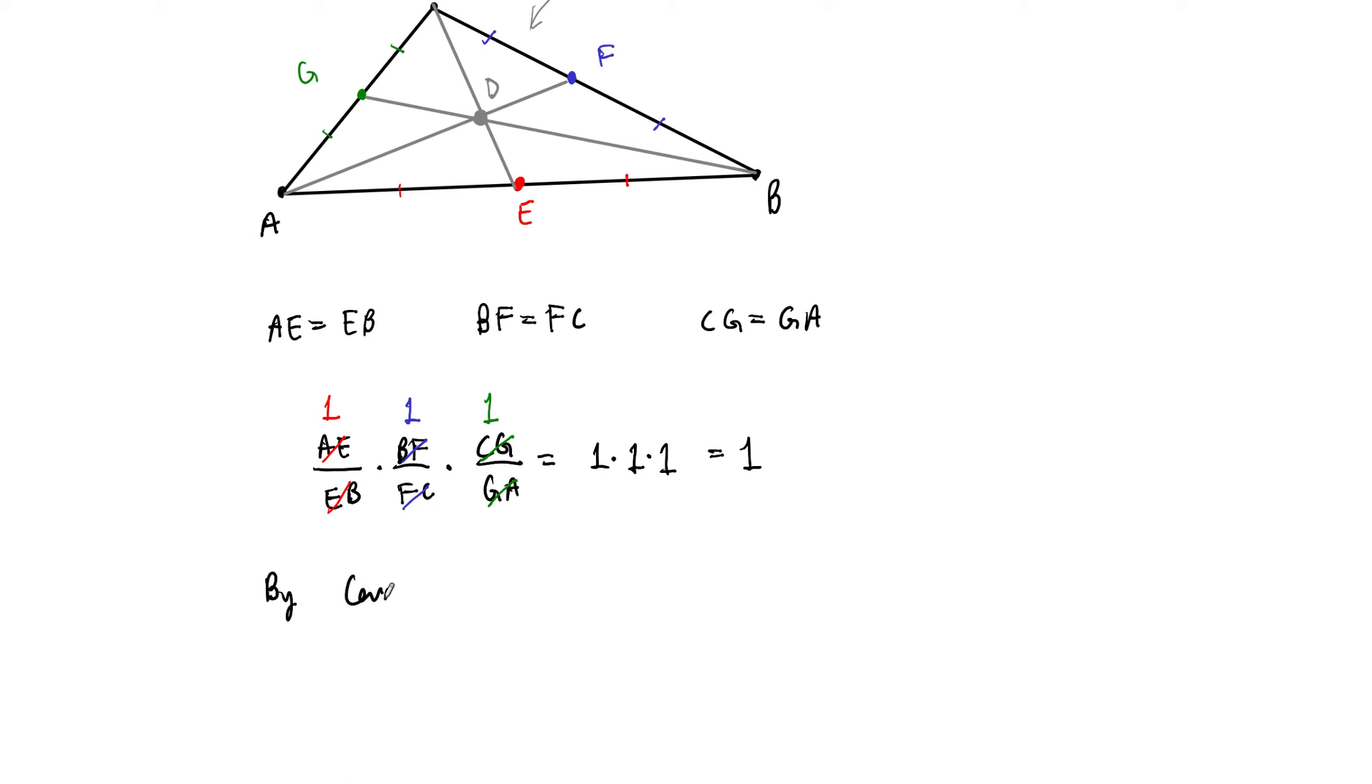So now, by Ceva's theorem, these line segments, which happen to be the medians, because of the way that they were constructed. So by Ceva's theorem, the lines AF, BG, and CE must intersect in a common point. And that common point in my picture is D. So there we go.